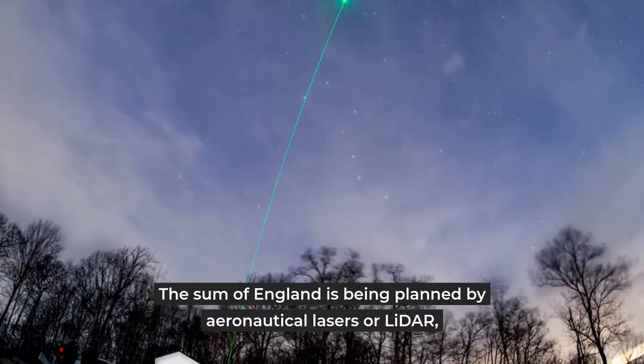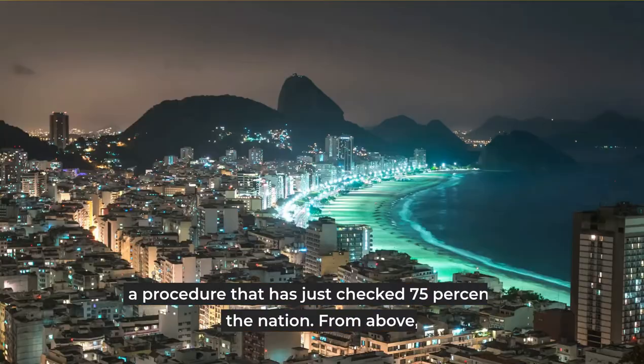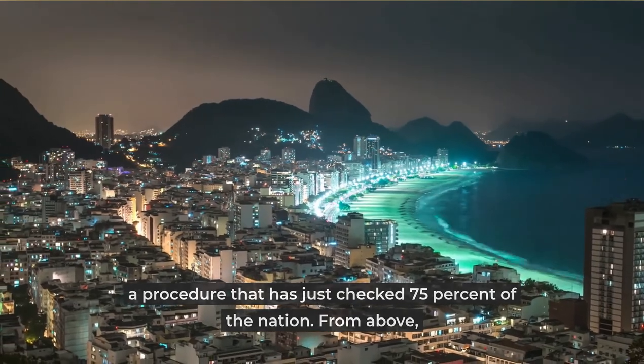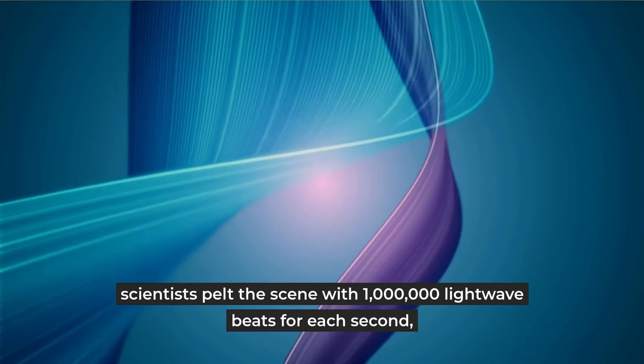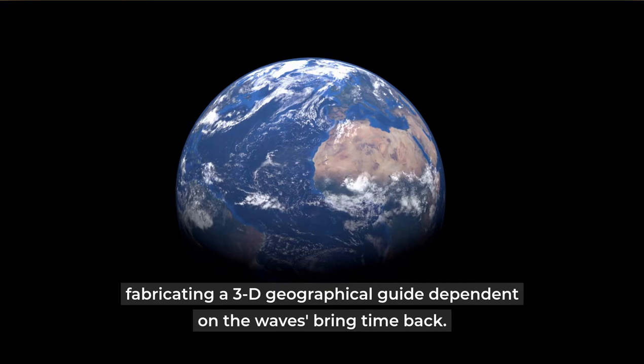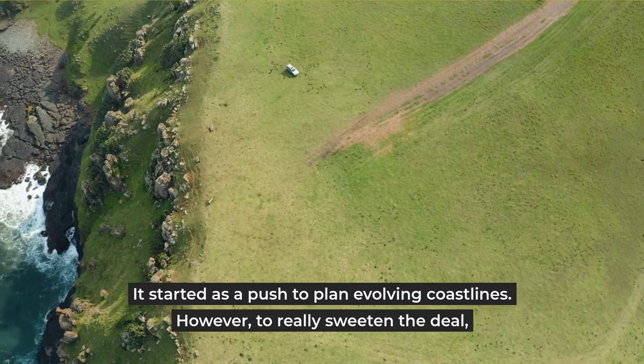The whole of England is being mapped by aerial lasers or LIDAR, a procedure that has already checked 75% of the country. From above, scientists pelt the landscape with 1 million light wave pulses per second, building a 3D geographical map based on the waves' return time. It started as a push to map evolving coastlines.